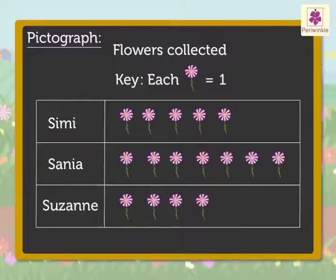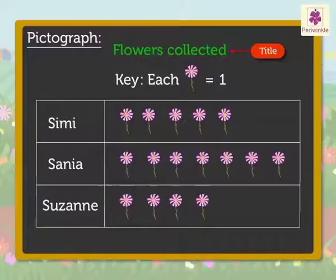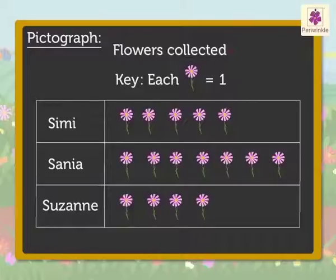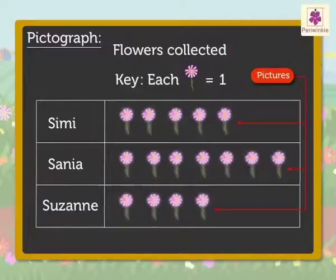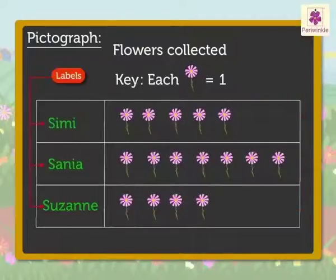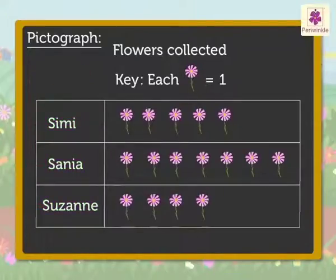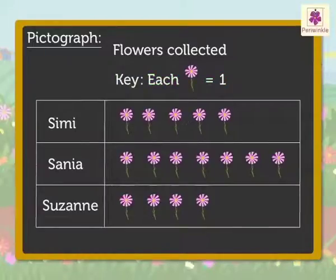We should be able to collect information from a PICTOGRAPH by reading it. Every PICTOGRAPH has: 1. A TITLE which tells us what the PICTOGRAPH is about. 2. PICTURES which tell us the given number of objects. 3. LABELS which tell us what kind of data is shown. 4. The KEY which tells us the number each picture is equal to.